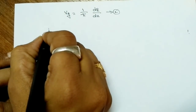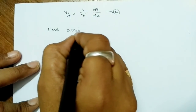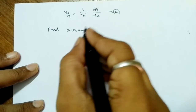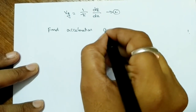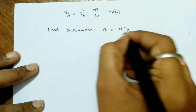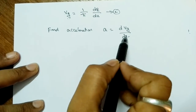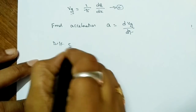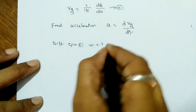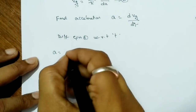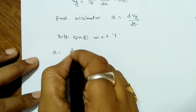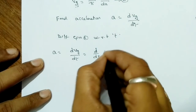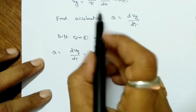Now we find the acceleration. The acceleration a = dVg/dt. Differentiating equation 2 with respect to time, a = d/dt of (1/ℏ) · dE/dk.